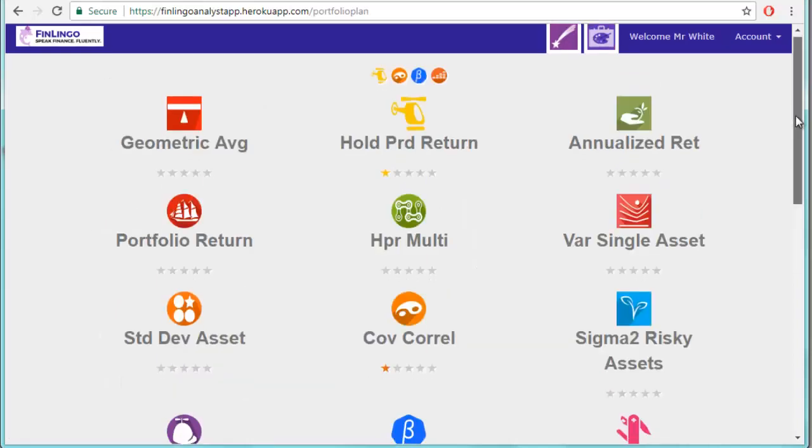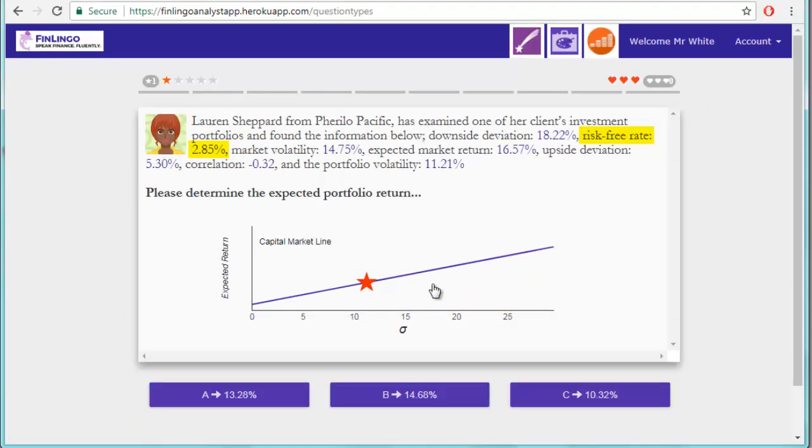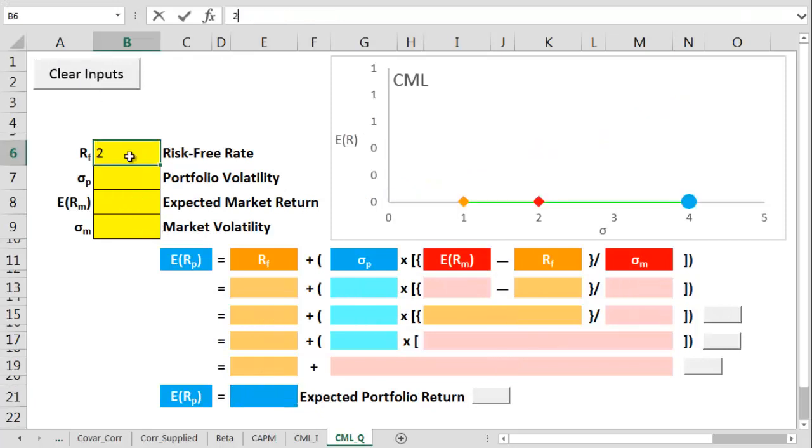Let's try a question then on Finlingo. Here I've got a risk-free rate of 2.85%, a target portfolio risk of 11.21%, an expected market return of 16.57% and a market risk of 14.75%. Let's move those figures then over to the incredible spreadsheet.